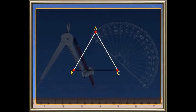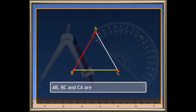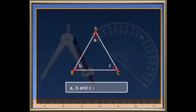Now AB, BC, and CA are the sides of the triangle. A, B, C are the angles.